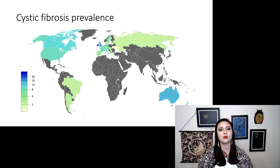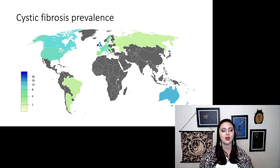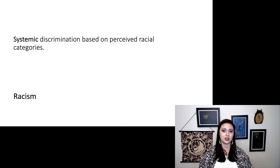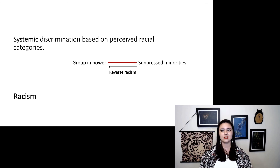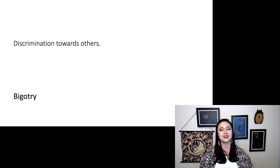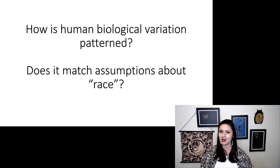Some of what could be going on with these different racial diseases is they happen to be more common in certain populations which align a little bit with common ideas of race. But just because they happen to align does not support the idea of distinct racism. It is important to address racism itself. Racism is systemic discrimination based on perceived racial categories. Race is very real in a social context with real social consequences, but it isn't backed up by the biological evidence. It is always the group in power against oppressed minorities — reverse racism isn't a thing. We can have discrimination towards others, but that is simply called bigotry. So how is human biological variation patterned? Does it manifest assumptions about race?